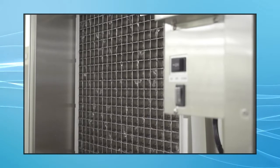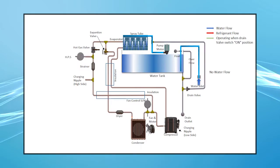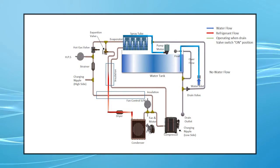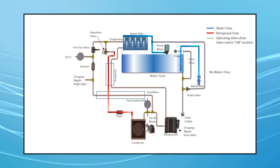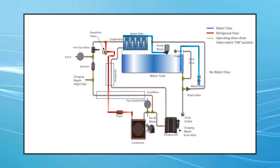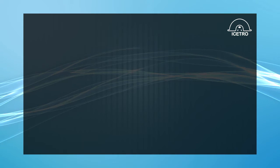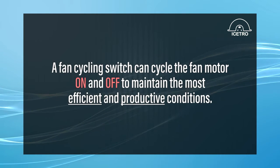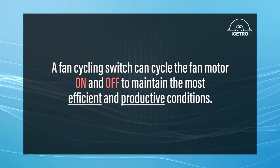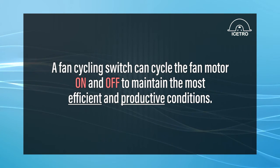Then, the hot gas solenoid is energized to equalize pressure. The machine will then start the freeze cycle. The water pump is now pumping water across the evaporator, and the condenser fan motor is operating. A fan cycling switch can cycle the fan motor on and off to maintain the most efficient and productive conditions.